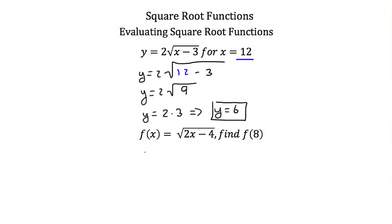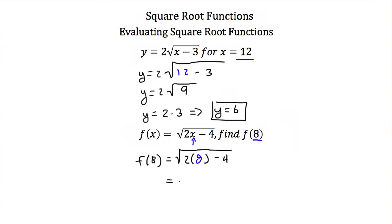Let's try our next example. We have f(x) is equal to the square root of 2x minus 4, and we want to find f(8). So we plug in 8 for x. Our f(8) is equal to the square root of 2 times 8, minus 4. 16 minus 4 is 12, so we end up with the square root of 12.